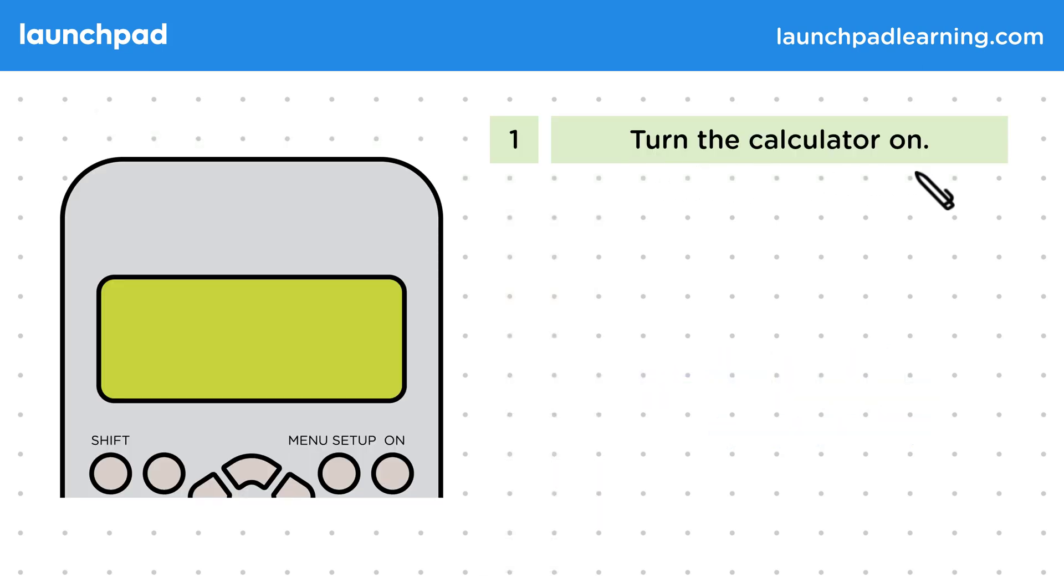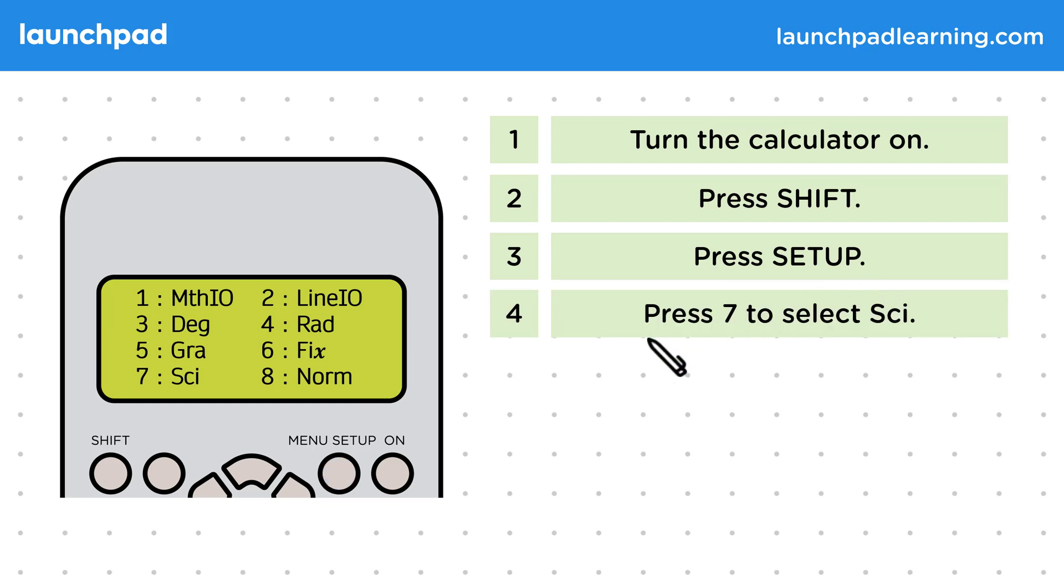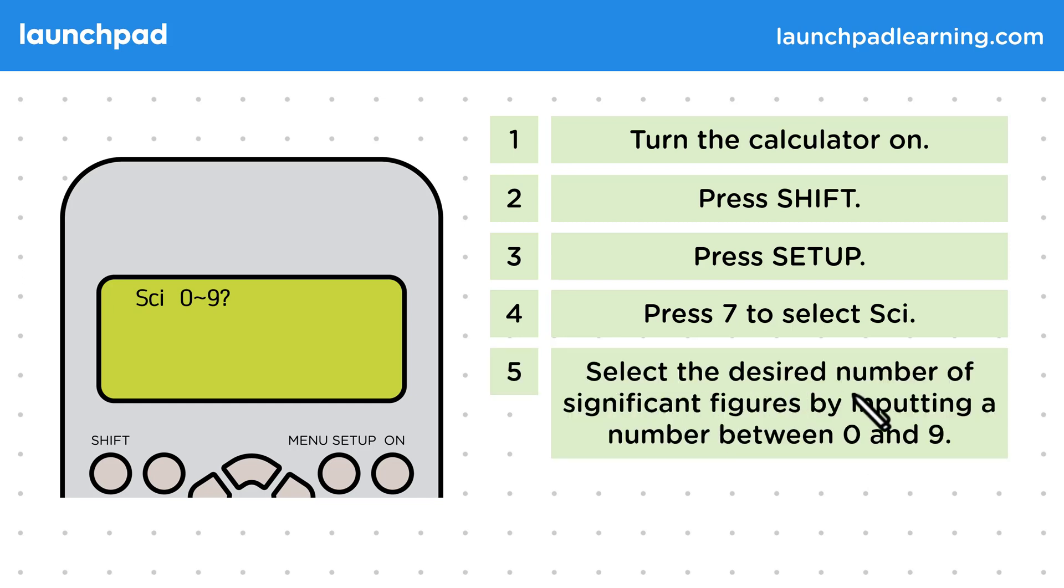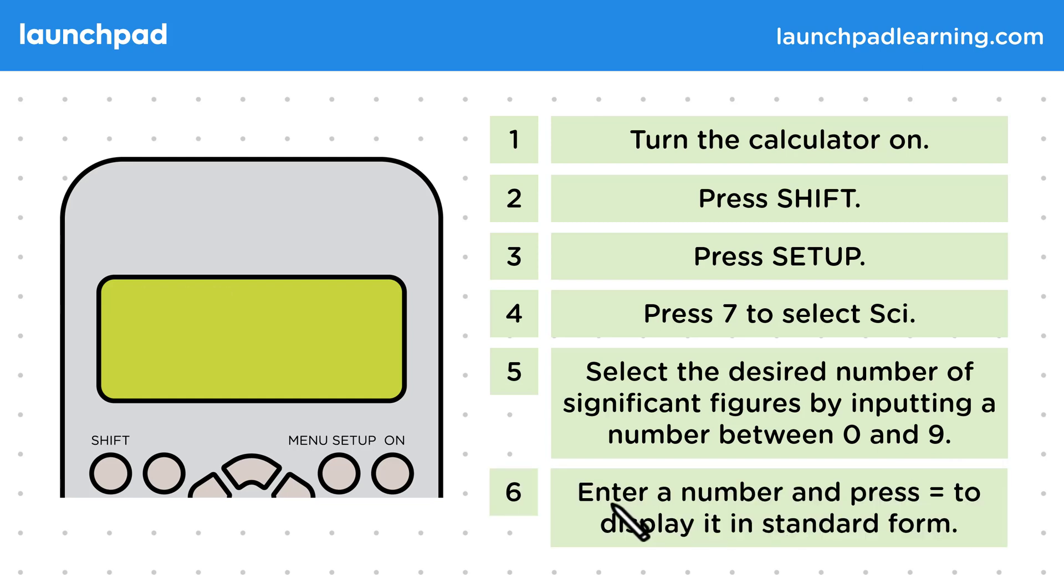First, turn the calculator on. Then press shift. After that, press setup. Then press 7 to select psi. Your screen will look like this. Then select the desired number of significant figures by inputting a number between 0 and 9. Two or three significant figures would be standard. Finally, enter a number and press equals to display it in standard form.